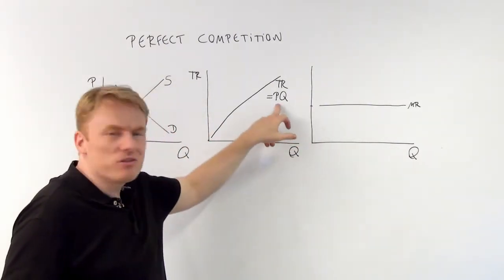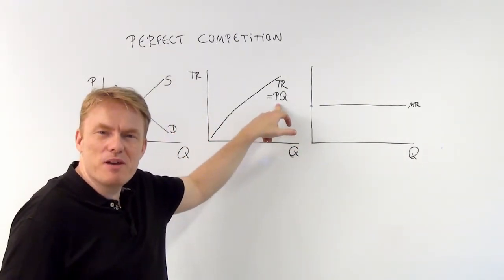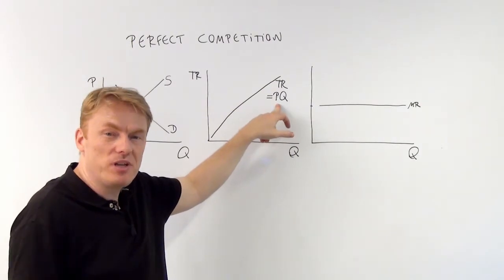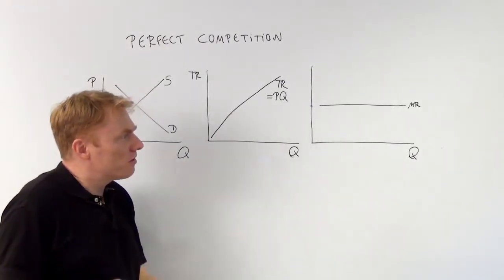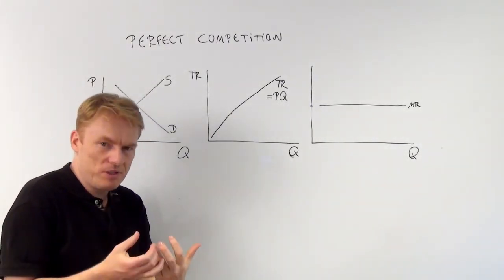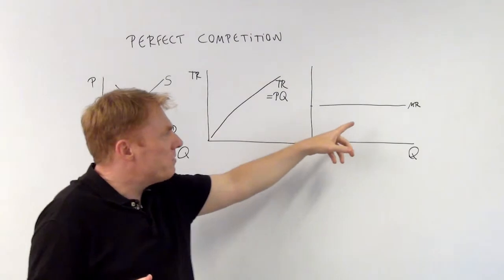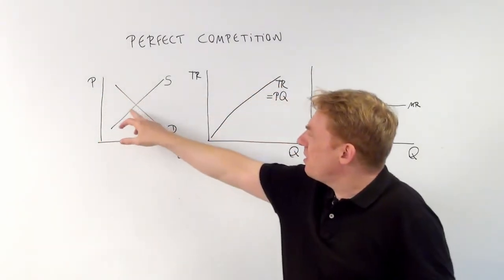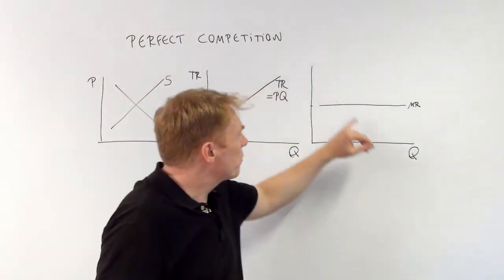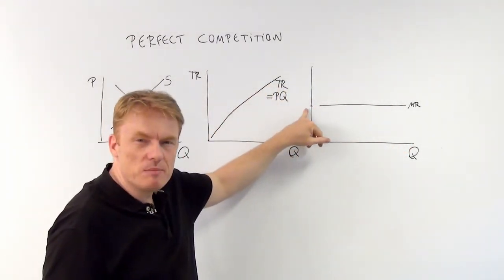So, as we consider price takers, we have P times Q, that is the total revenue curve. And so, marginal revenue is the price itself. And the price we consider here is the equilibrium price at this same height.